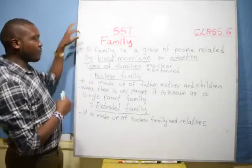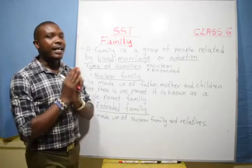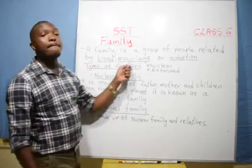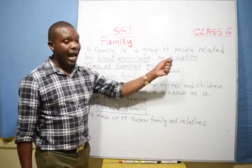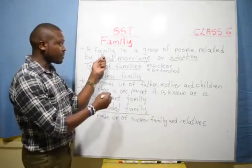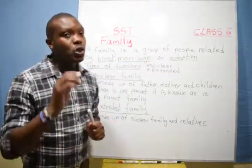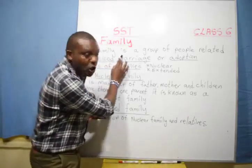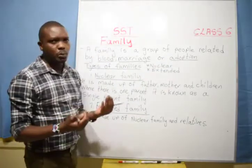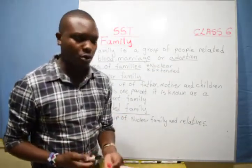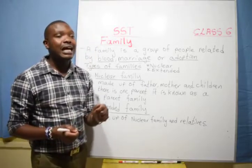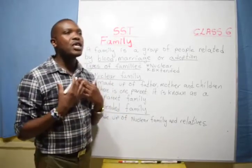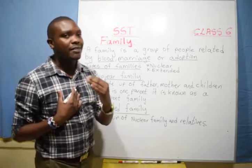A family is a group of people related together by either blood, marriage, or adoption. A family is a group of people related together by either blood, marriage, or adoption. What is adoption? For the pupils who don't know about adoption: adoption is getting a child who does not belong to you and taking the child to be yours. That is what we call adoption.